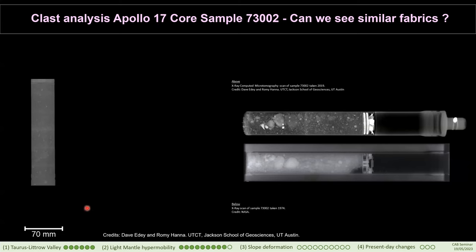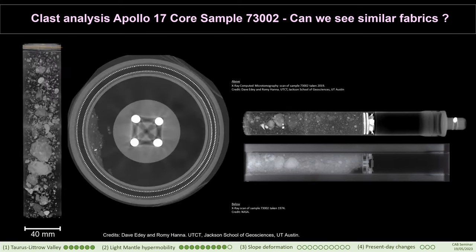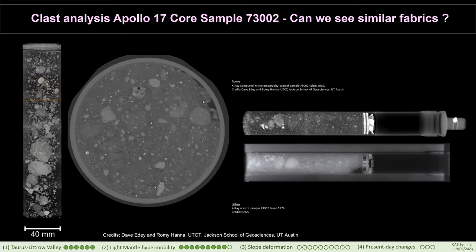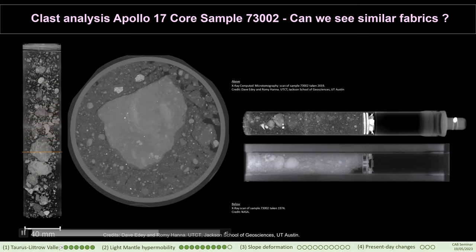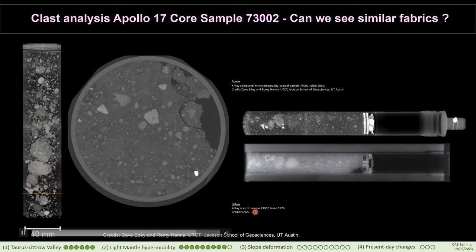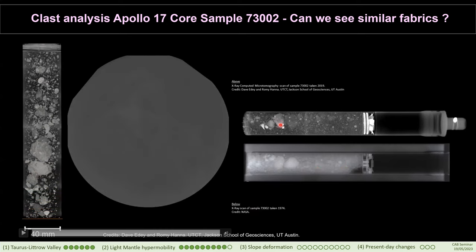We mentioned earlier the core sample extracted from the light mantle deposit. Since we ran our experiments using lunar analog material, we have real lunar material extracted from the light mantle deposit — so let's see if we can observe any of the microstructures or grain fabrics from our experiment in that real sample. Here is a video of the 3D scanning of the top part of the Apollo 17 core sample. The level of detail is amazing. We clearly see the difference between a 1974 X-ray scan and a 2019 X-ray computed micro-tomography scan — this is exactly why NASA waited for more advanced technology.